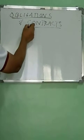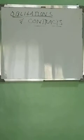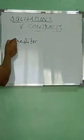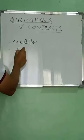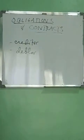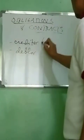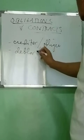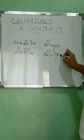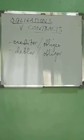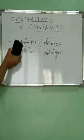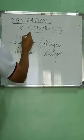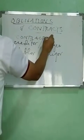When we talk of contracts, we also talk about the creditors — these are the contracting parties. And if there is a creditor, the other party is called the debtor. The other term for the creditor is what we call the obligee, and the other term for debtor is the obligor. These are what we call the contracting parties.